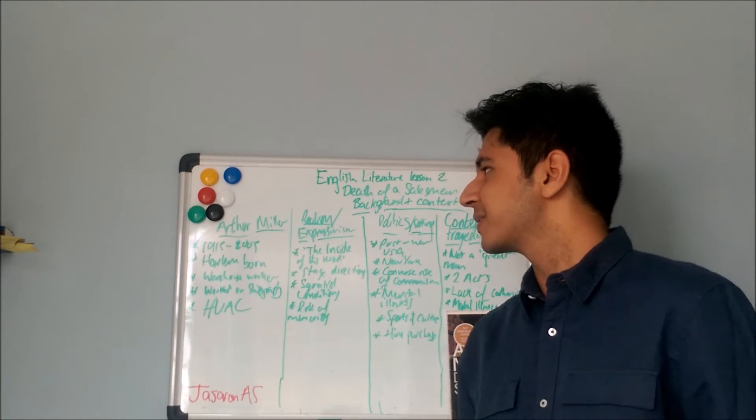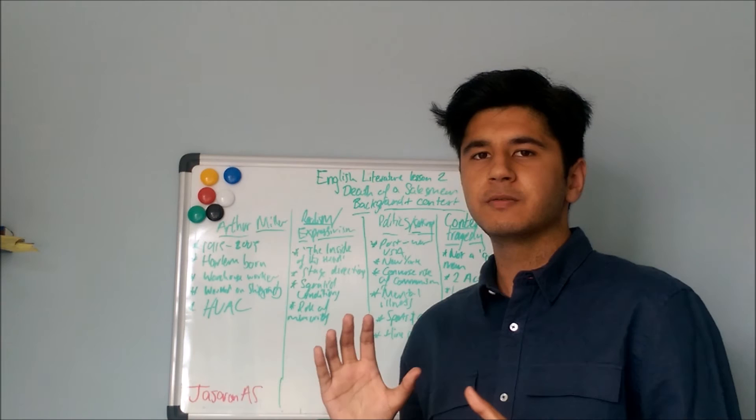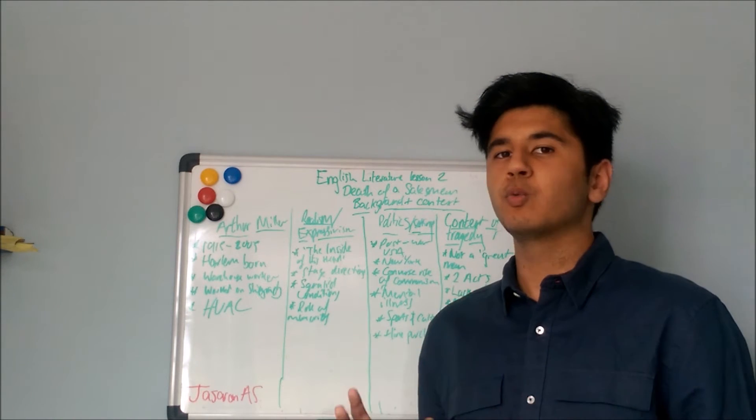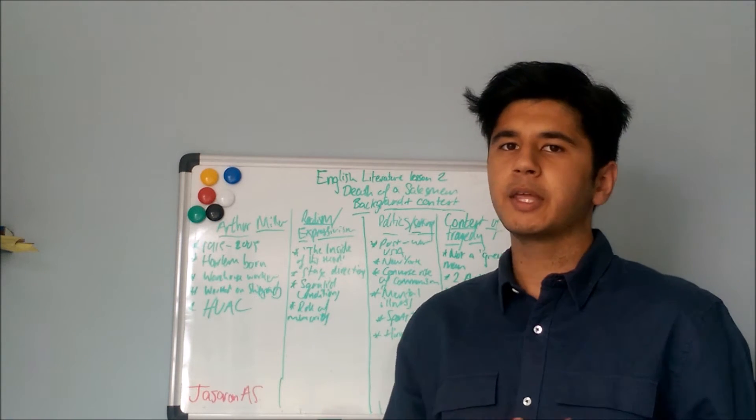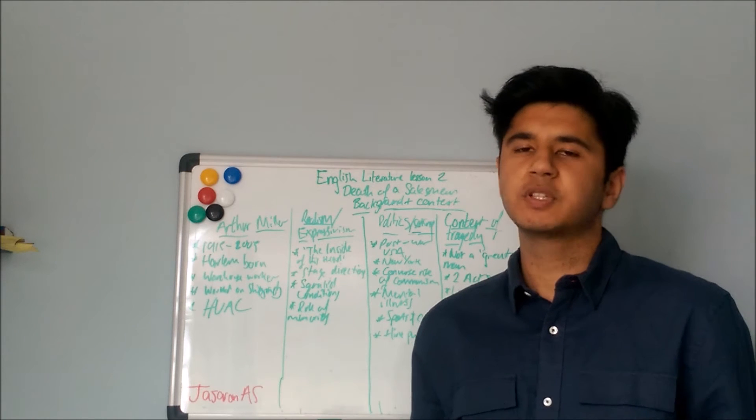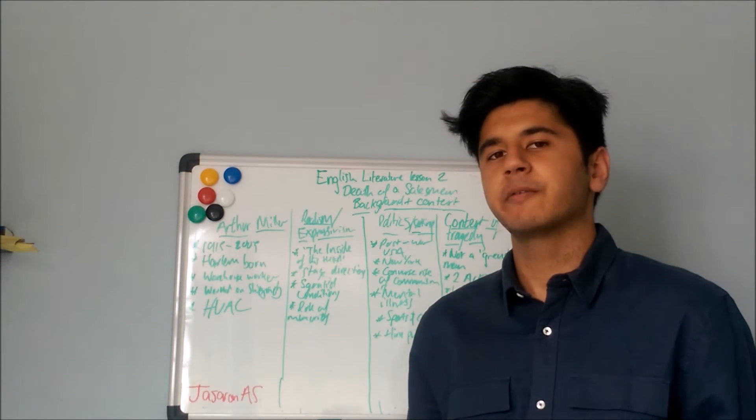Next we're going to look at realism and expressivism. These are two kinds of literary schools. It's kind of like modernism, post-modernism, that kind of thing.